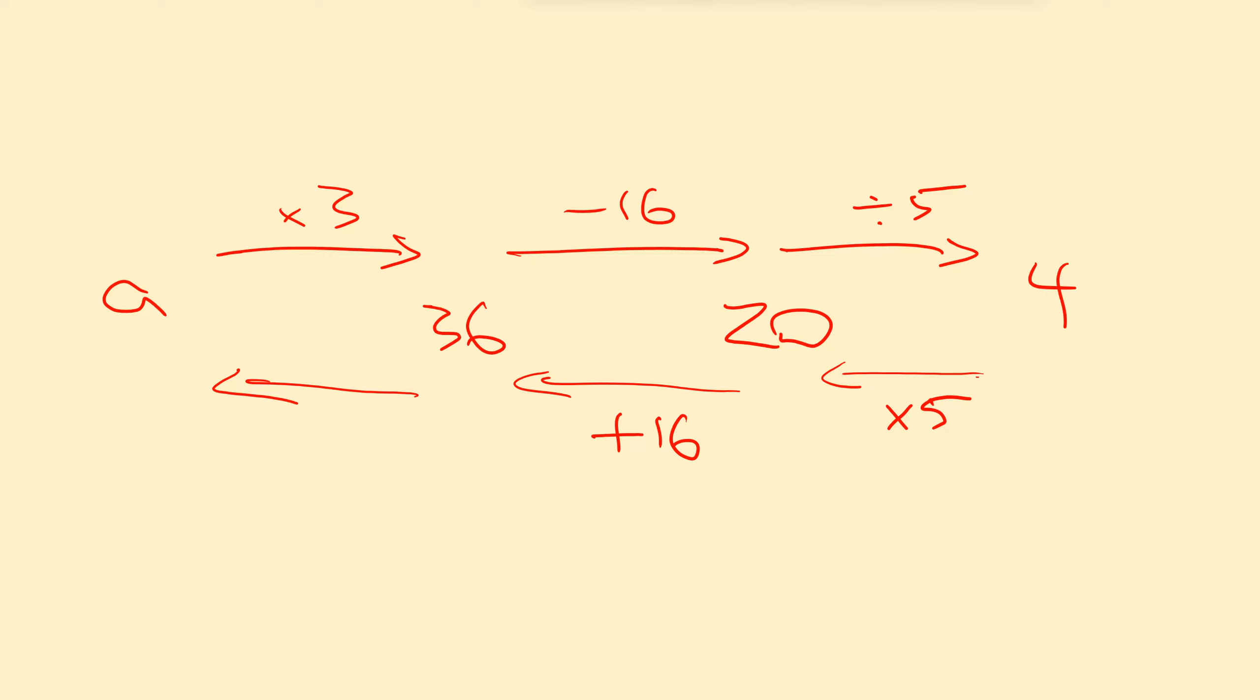The inverse of times 3 is divided by 3. So now we have 36 divided by 3. Well that's 12. But that's a. We're back at a. Which means that a equals 12. We have solved for a once again.